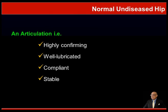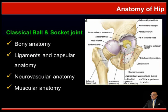In a normal undiseased hip, there is an articulation of the femoral head and the acetabulum which is highly congruent. The joint is well lubricated, compliant, and very stable. If you look at the anatomy of the hip, it is a classical ball and socket joint, and by virtue of its bony anatomy, ligaments and capsular anatomy, neurovascular anatomy, and muscular anatomy, it is a very stable joint.